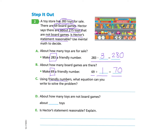Now we will look at Part C: using the friendly numbers, what equation can you write to solve the problem? Using our friendly numbers, we put 280 as the amount of toys and take away 70 for the board games. So this is 280 minus 70, which is easier to compute mentally. If you'd like to pause and solve, you should find that your answer is 210 — the amount of toys that are not board games.